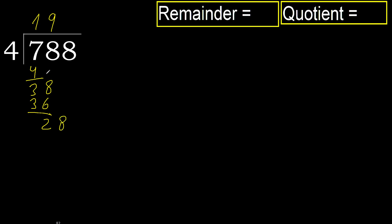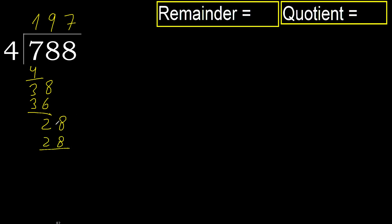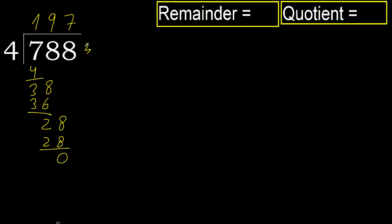Next: 28. 4 multiplied by 7 is 28, which is not greater. Ok, subtract. Next, there is no number, therefore finished.